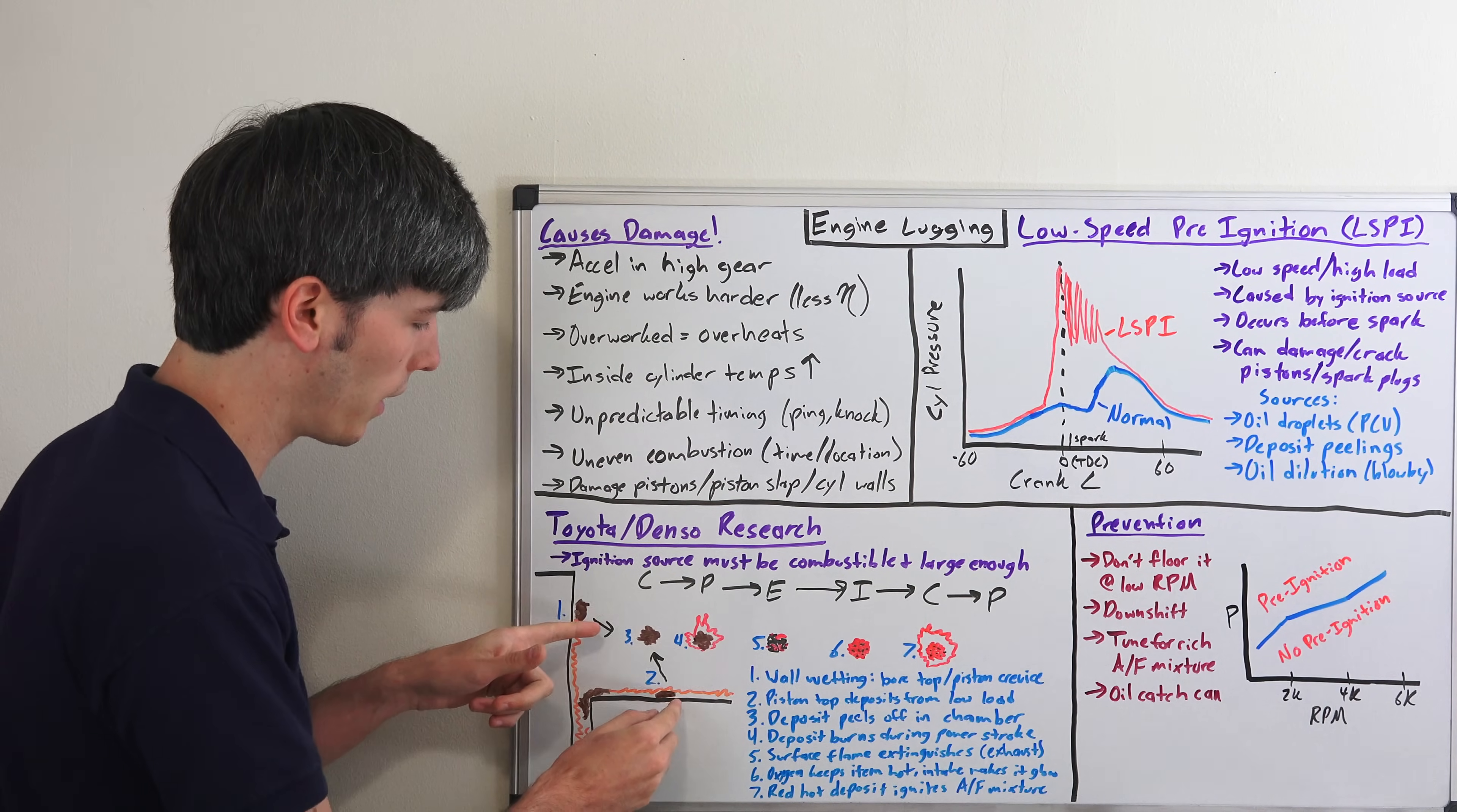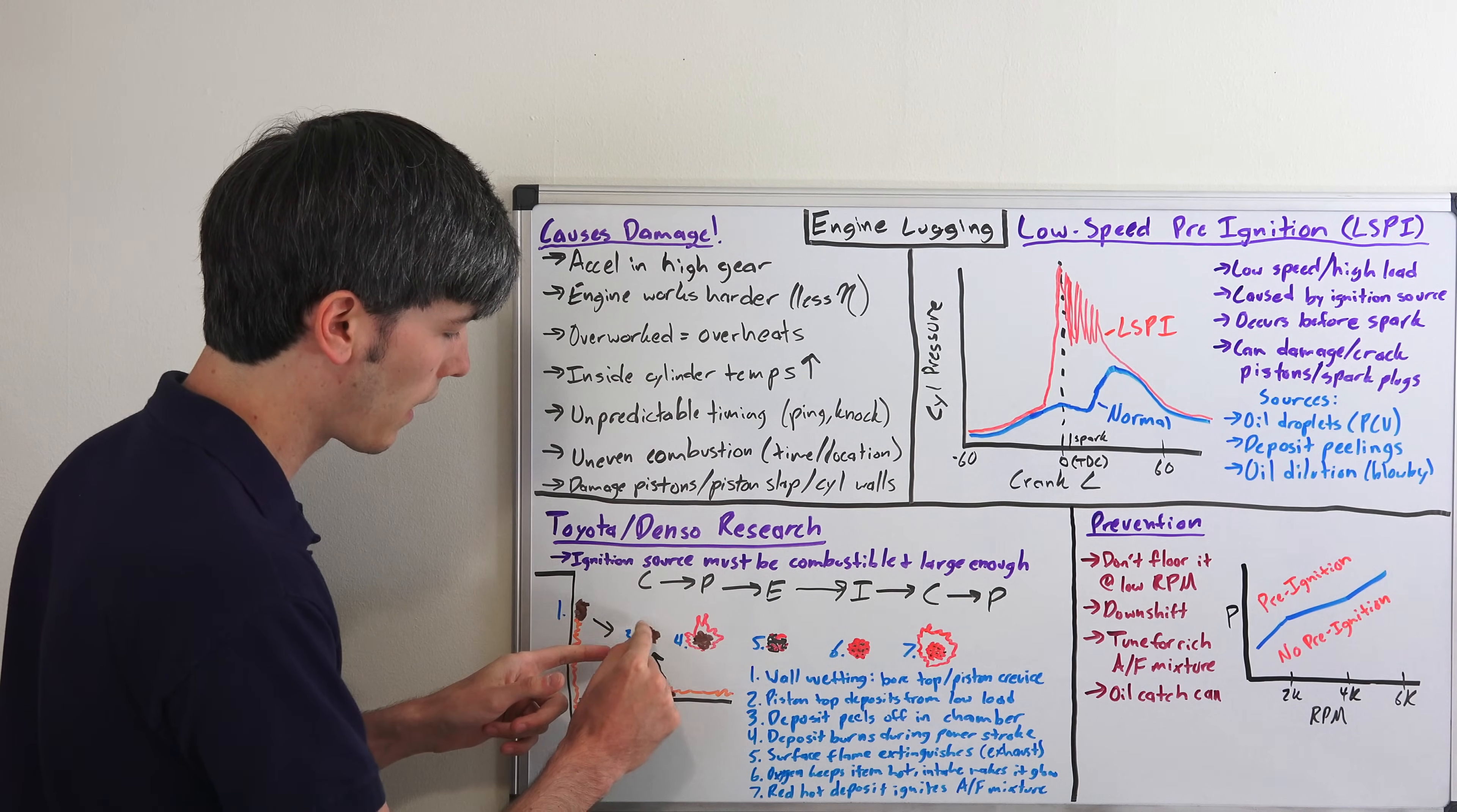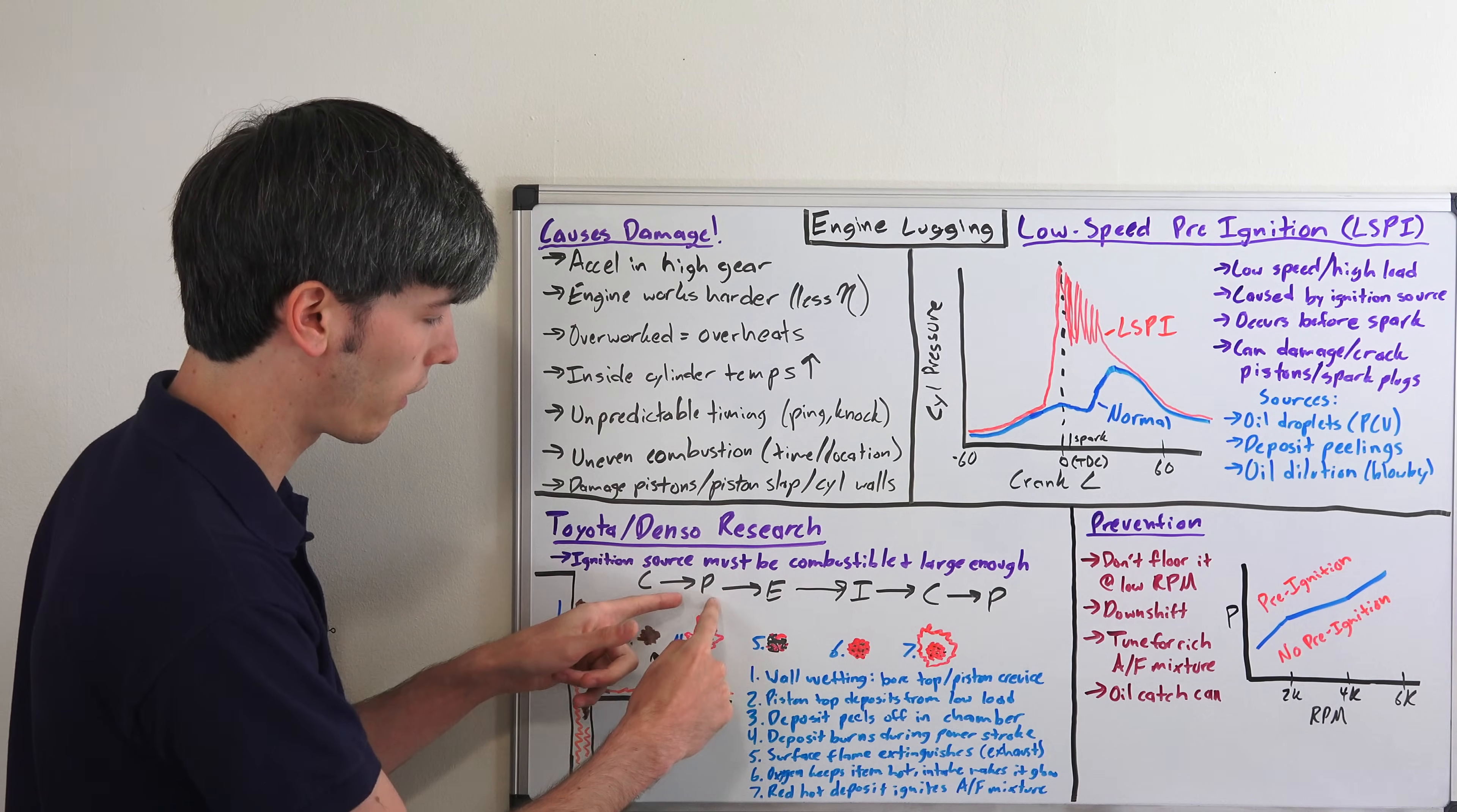At low load operations you can have these deposits start to form up on the piston. Eventually these deposits can peel off and float inside the combustion chamber. Let's say we have our compression stroke here and it peels off. We've got this combustible item, this combustible deposit which is floating in the chamber. We then have our power stroke.